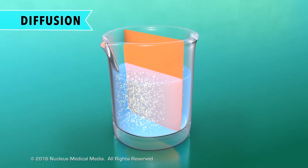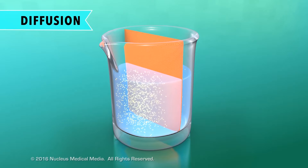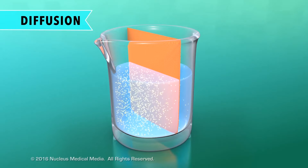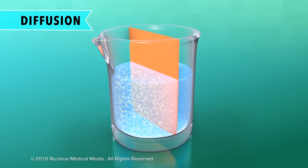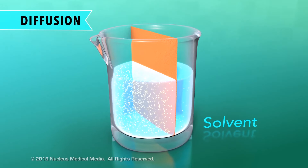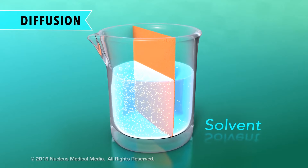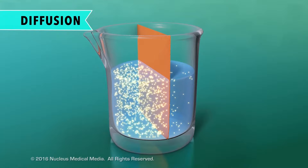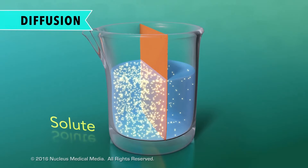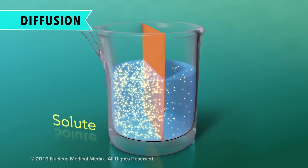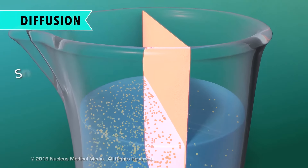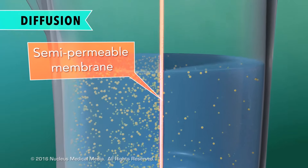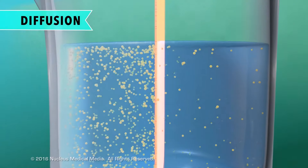We'll describe diffusion first, using the solution in this container. A solution is a liquid with something dissolved in it. The aqua color represents the solvent, meaning the liquid part of the solution. The yellow particles represent the dissolved substance, called the solute. The structure in the middle of the container represents a semipermeable cell membrane, a barrier through which only certain sized particles can pass freely.